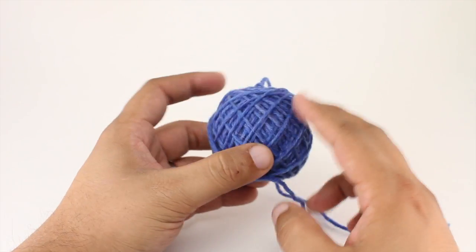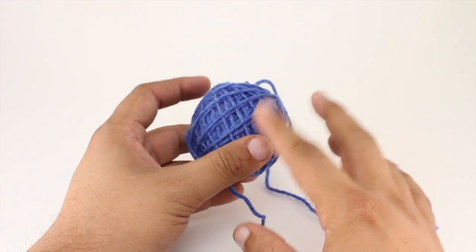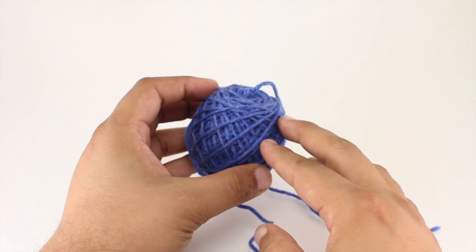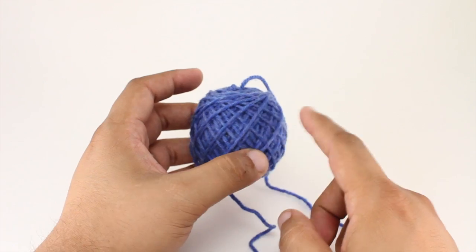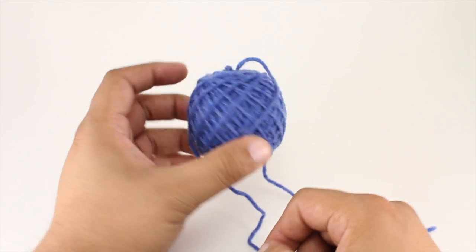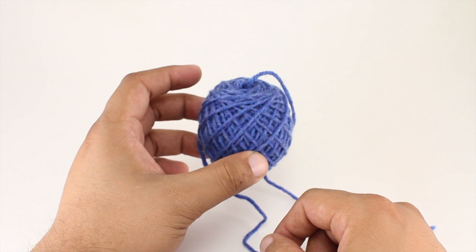This is going to be great for intarsia if you have a little bit of yarn and you don't like using a bobbin, or you need more yarn than a bobbin might be comfortable holding. Then this is a great option for you. So that's how to hand wind a center pull ball of yarn.